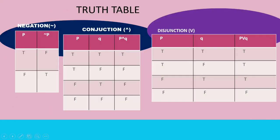For negation, if P is true, then we will make the statement not true. For conjunction, if P is true and Q is true, then P conjunction Q is true. If P is true and Q is false, then P conjunction Q is false. If P is false and Q is true, the statement is false. If P is false and Q is false, the statement is false. For disjunction, if P is true and Q is true, the statement is true. If P is true and Q is false, the statement is true. If P is false and Q is true, the statement is true. If P is false and Q is false, the statement is false.